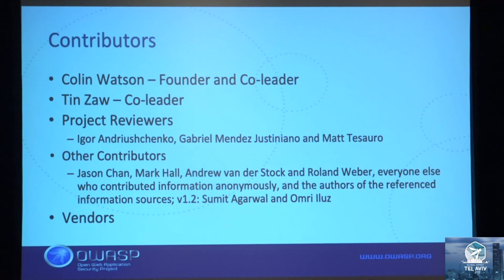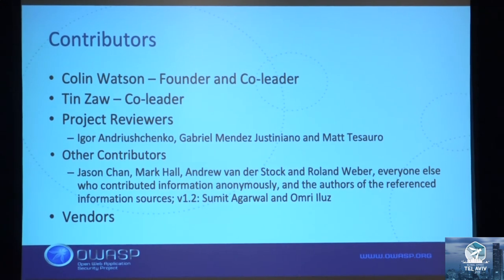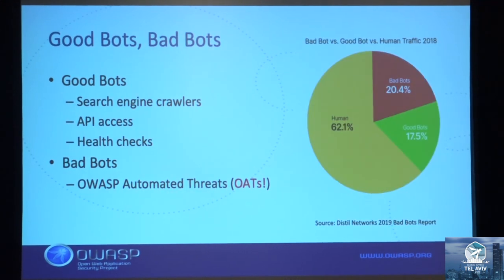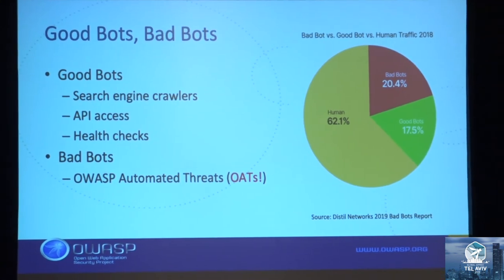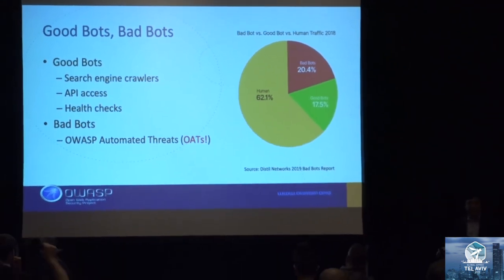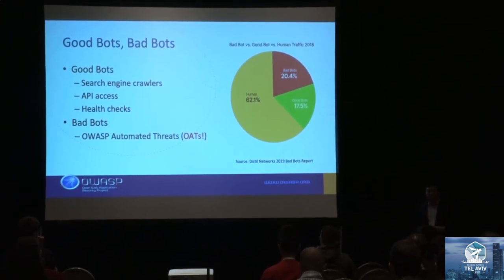Some vendors also contributed ideas and data to this. This data is from one of the vendors in the industry and is based on 2018 data. We divide web traffic into human traffic generated by humans and bots — these are the automated threats. Not all bots are bad. Good bots include search engine crawlers, API access, and health checks — you want them to discover your website. But about 20% of traffic are bad bots.